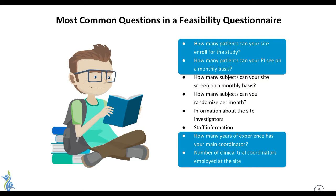First, how many patients can your site enroll for this particular study? So if it's a type 2 diabetes study with certain criteria, how many of those types of patients will you be able to screen, find, and enroll into the study? How many patients can your principal investigator see on a monthly or weekly basis, so they can determine if there's capacity? And then how many subjects can your site screen on a monthly basis — not enroll, but screen — and how many subjects can your site randomize per month?